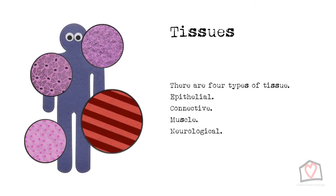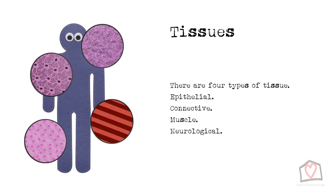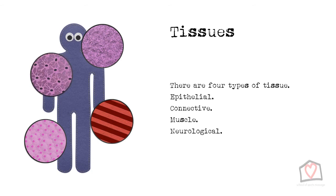Muscle and nervous tissue are the two remaining types. As these are so important and directly influenced by massage, they will be concentrated on in their own sections. However, in brief, muscle tissue is elastic, able to stretch and contract, allowing the body to move, while nervous tissue provides sensation and controls body commands, both voluntarily and automatically.